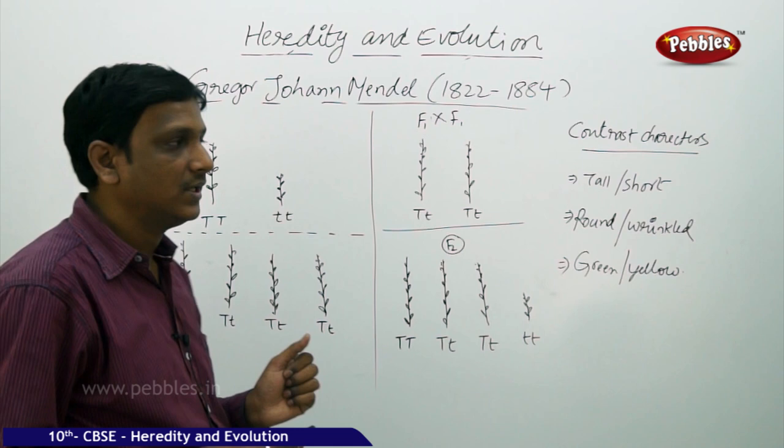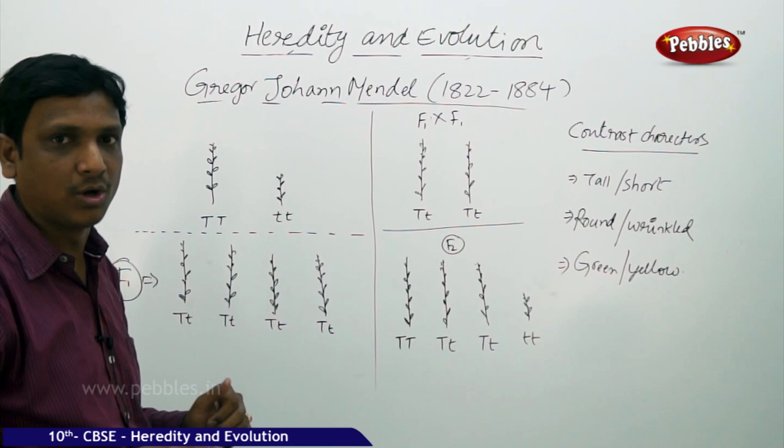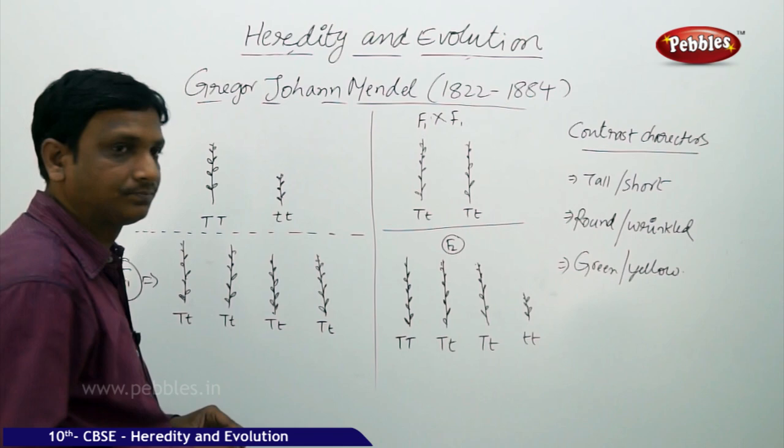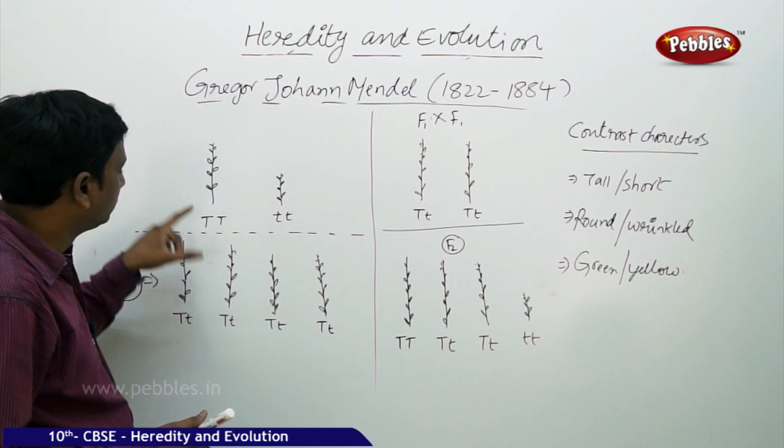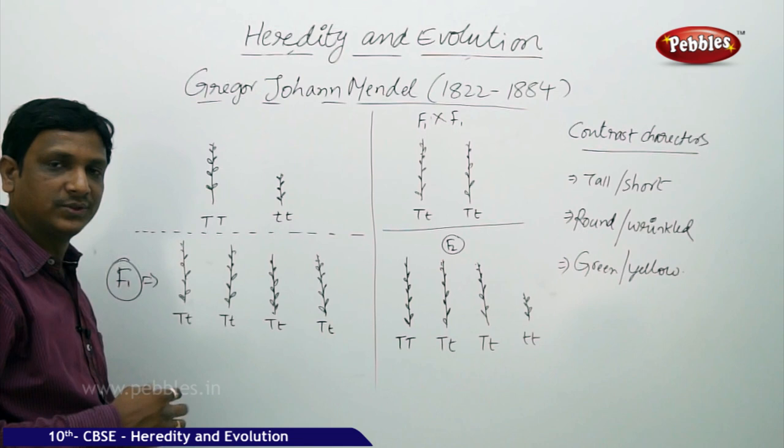This experiment is based on the height of the pea plant — tall and short. Mendel selected one tall pea plant and one short pea plant and cross-pollinated them. The tall pea plant has capital T, capital T. Every character, every trait is expressed by two genes.